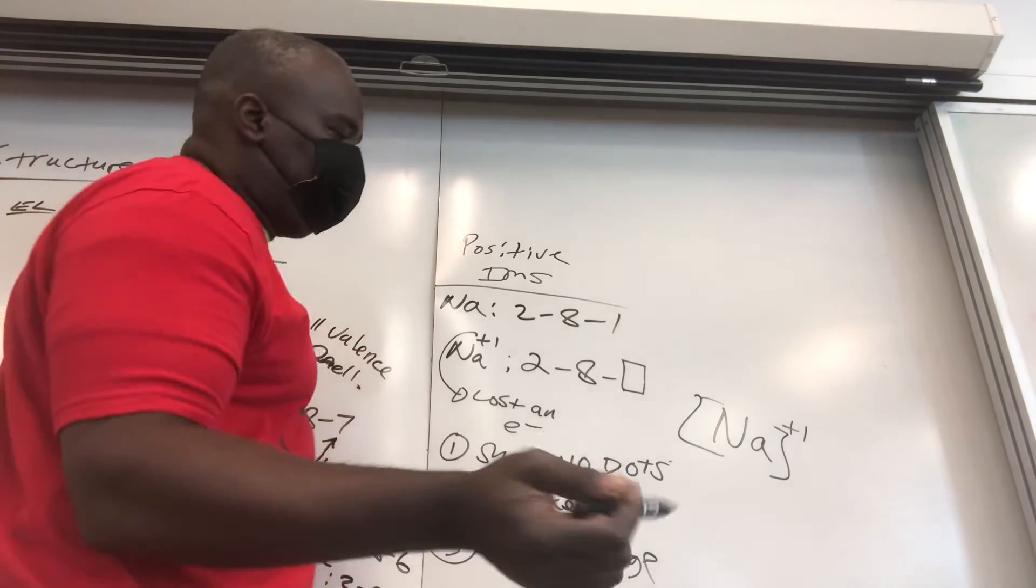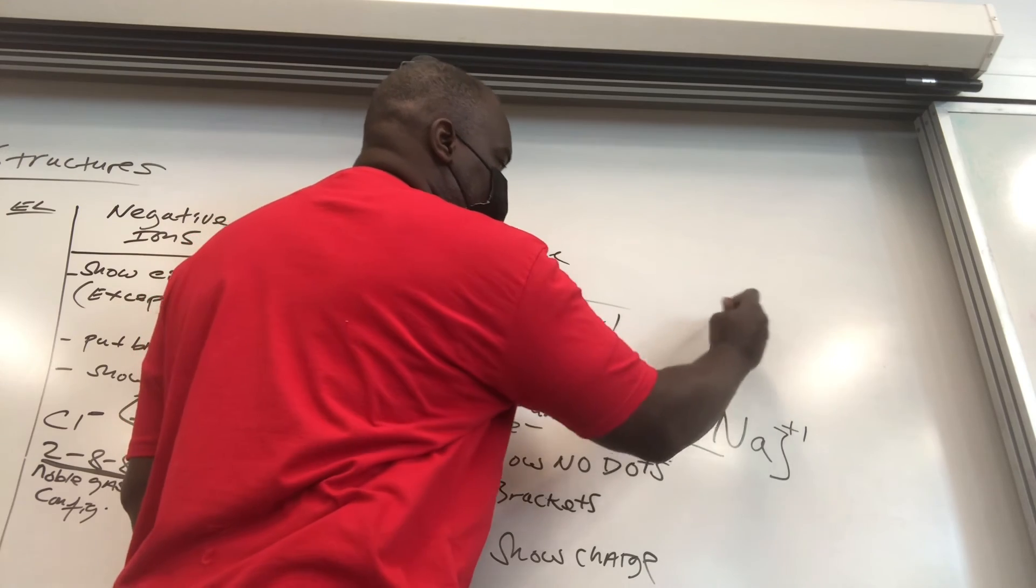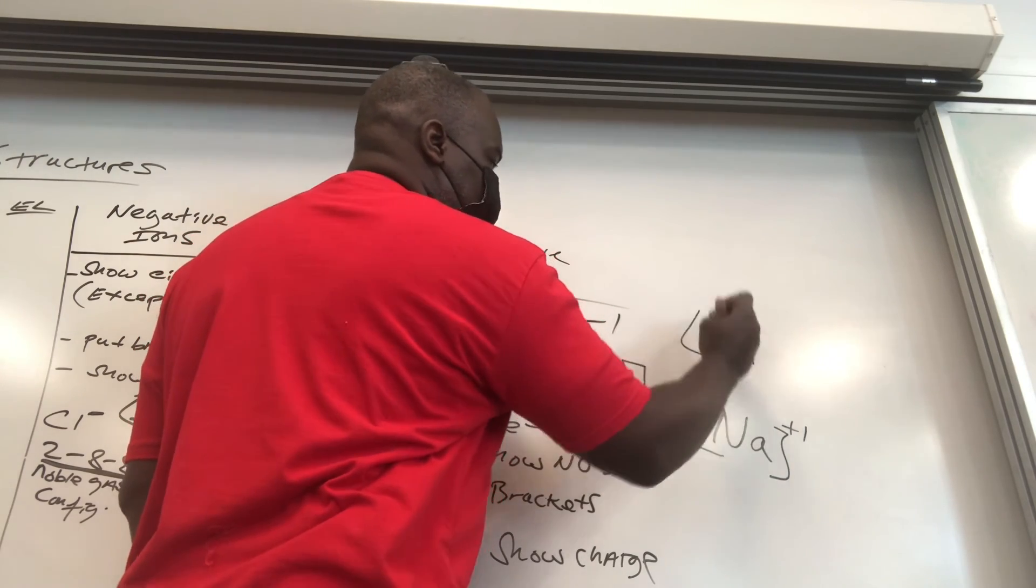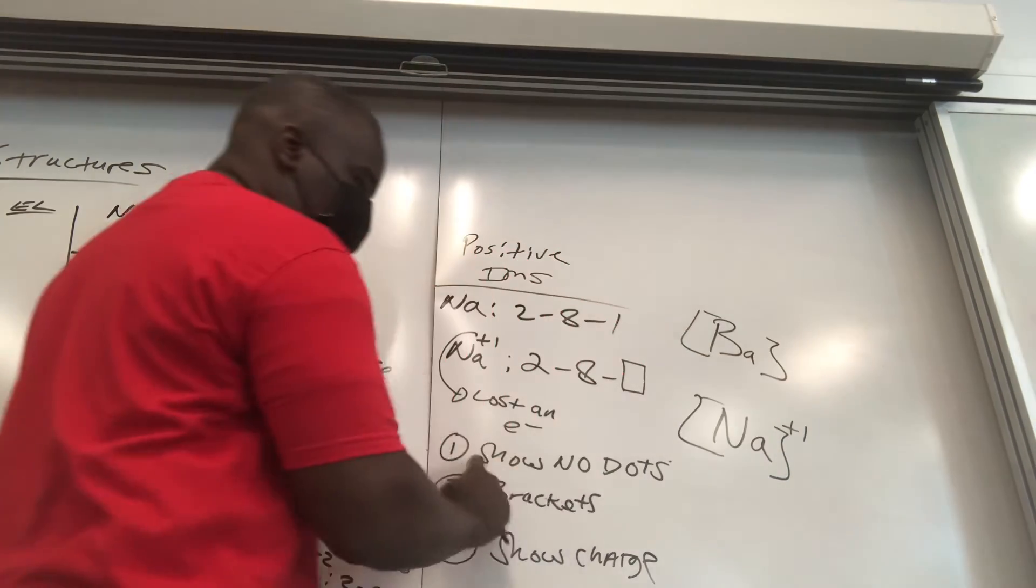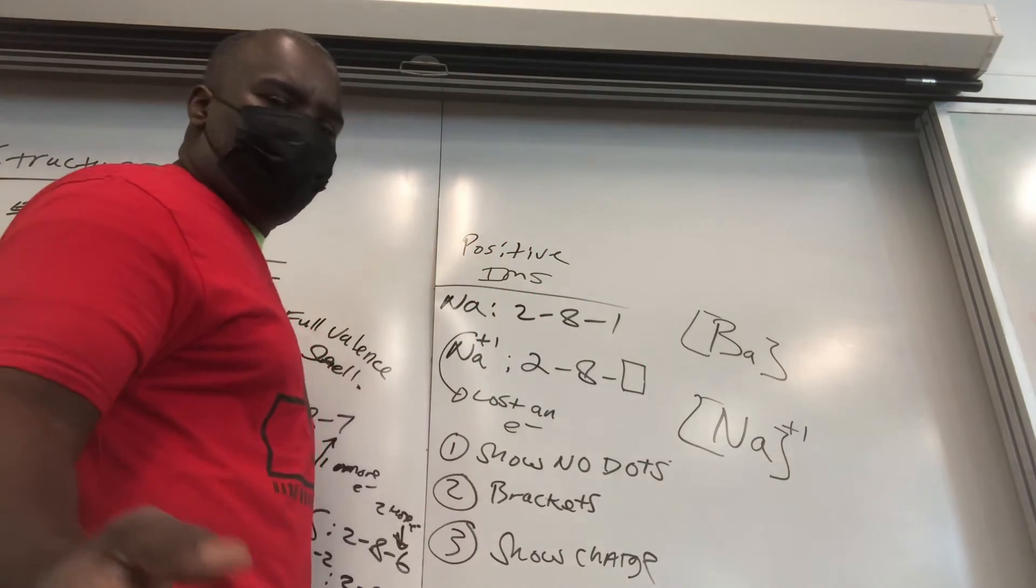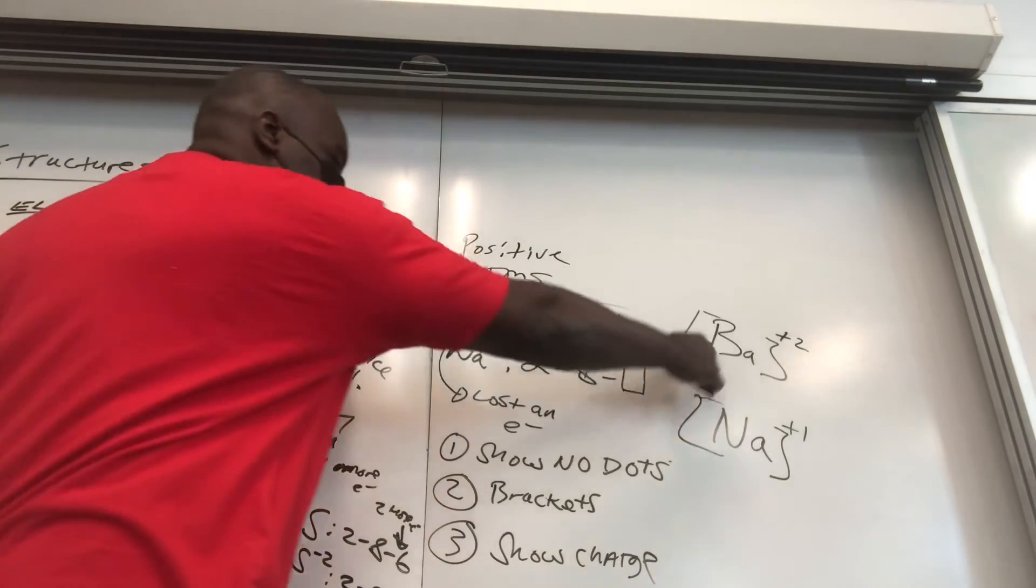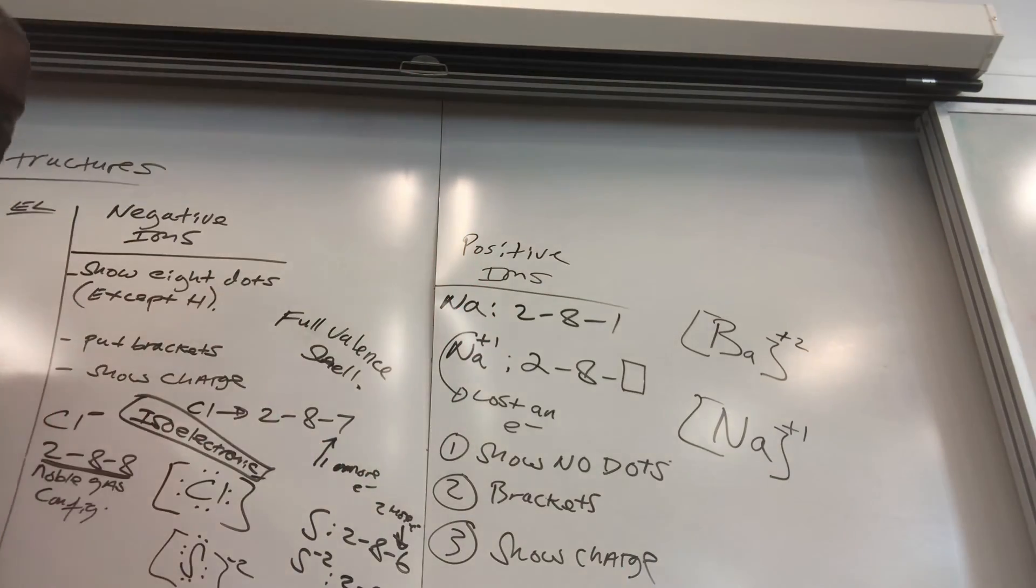Now let's say they ask you to do the dot structure for barium Ba 2 plus. You put your barium down. It's a positive ion, so you're going to show no dots. You got your brackets, but you must, must, must put your charge. And what's the charge on barium? It's plus 2. You're done. It's a positive ion, no dots.